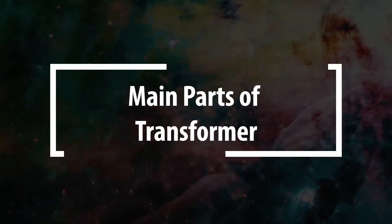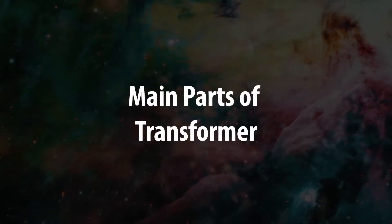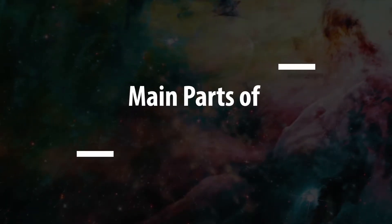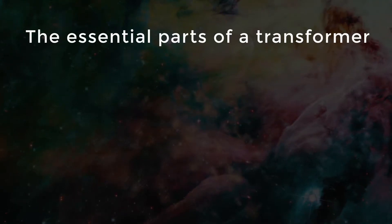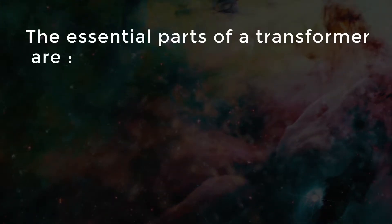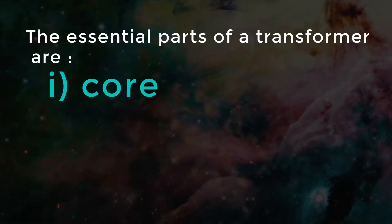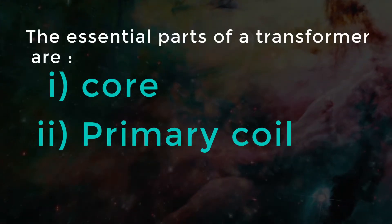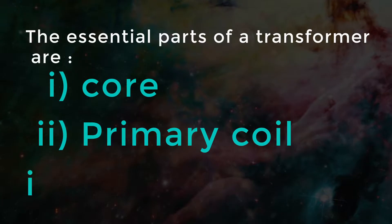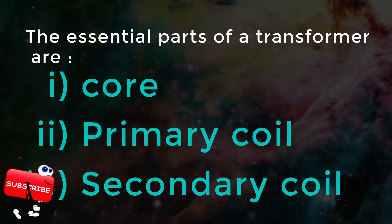Now let's look into the main parts of a transformer. The essential parts of a transformer are: one, core; two, primary coil; three, secondary coil.